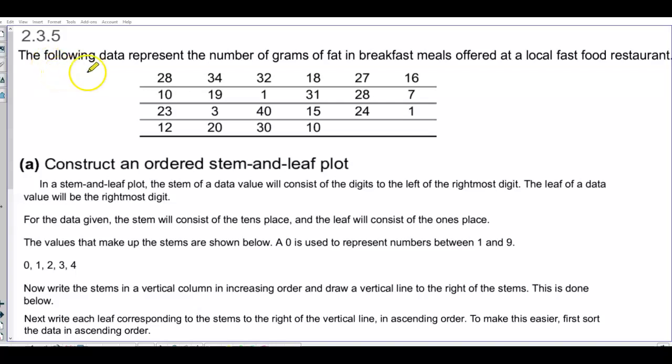2.3.5. The following data represent the number of grams of fat in breakfast meals offered at a local fast food restaurant. So here are the particular numbers. We want to be able to construct an ordered stem and leaf plot.